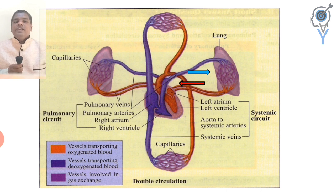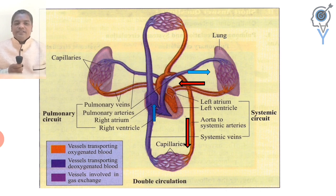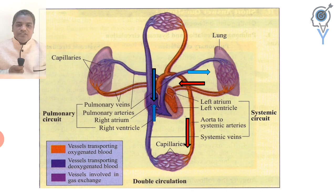The oxygenated blood is distributed to the parts of the body. This is a limitation of single circulation. In double circulation, the blood is circulated through the body with full separation of oxygenated and deoxygenated blood.